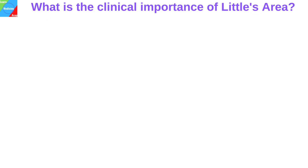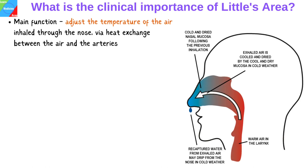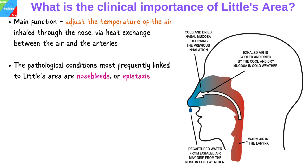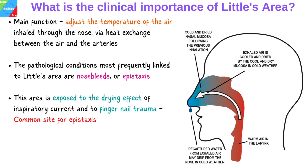What is the clinical importance of Little's area? Its main function is to adjust the temperature of the air inhaled through the nose via heat exchange between the air and the arteries. The pathological condition most frequently linked to Little's area is nosebleed, or epistaxis. This area is exposed to the drying effect of the inspiratory current and to fingernail trauma, making it the common site for epistaxis in children and young adults.